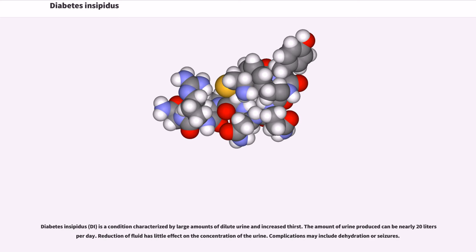Diabetes insipidus is a condition characterized by large amounts of dilute urine and increased thirst. The amount of urine produced can be nearly 20 liters per day. Reduction of fluid has little effect on the concentration of the urine. Complications may include dehydration or seizures.